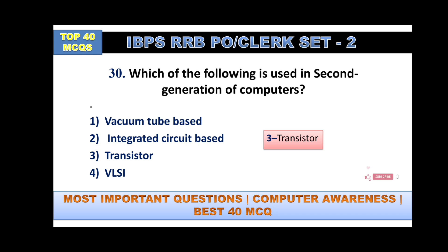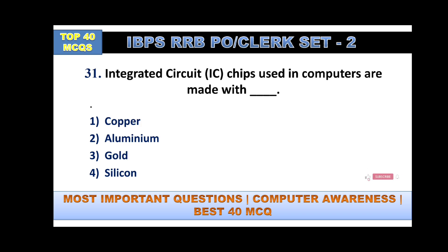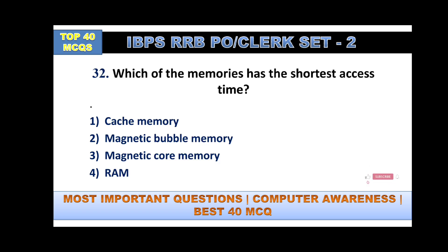Integrated circuit chips used in computers are made with copper, aluminum, gold, or silicon? The answer is silicon — option number four. Which memory has the shortest access time? Your answer is cache memory; cache is the fastest and has the shortest access time.